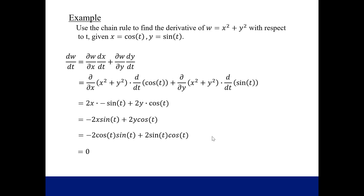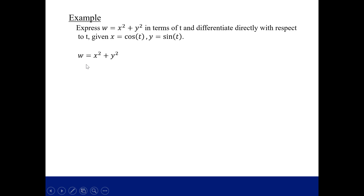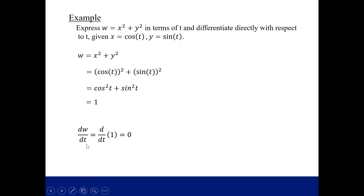You might be thinking: what if I substitute what x and y equal at the beginning, then take the derivative? You can. For the same example, we first express w in terms of t, then differentiate directly with respect to t. Substituting x equals cosine t and y equals sine t and simplifying, we get 1 because this is the Pythagorean identity. The derivative of the constant 1 is 0, giving us the same result as the chain rule.